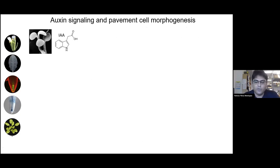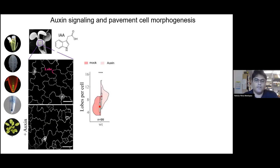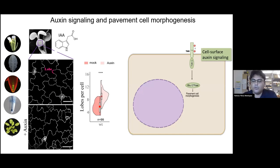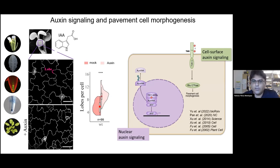In the Yang lab we've been interested in the epidermal cells of the shoot, because they have this beautiful puzzle-piece shape — an outgrowth that is called lobes — and those lobes are dependent on the concentration of auxin. Auxin is perceived at the cell surface and introduces a cascade to the Rho GTPases, and that has been the main focus of the Yang lab for 20 years: the non-canonical auxin signaling. The canonical signaling is regulation of gene transcription.